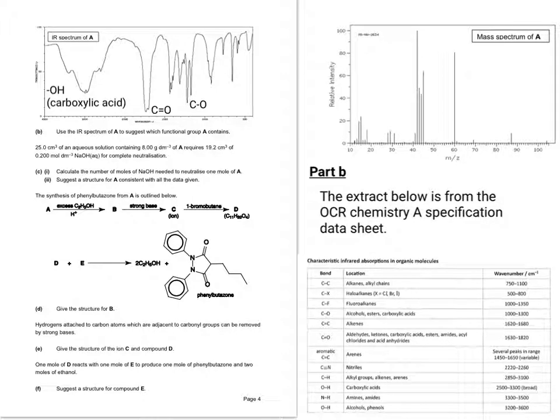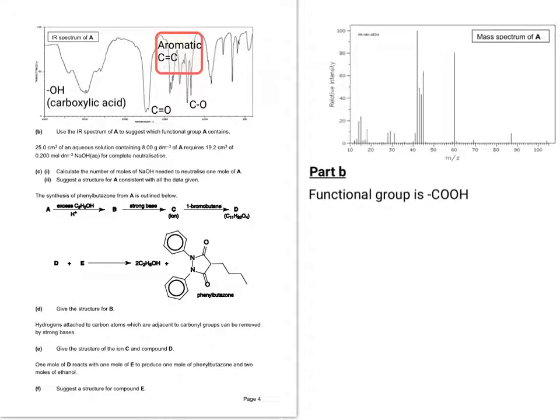So which functional groups A contains? So we've got the OH stretch for carboxylic acid, we've got C double bond O, and we've got C single bond O. We've also got some peaks that indicate the presence of aromaticity. So let's now have a look at what we've got. So our functional group is going to be COOH.